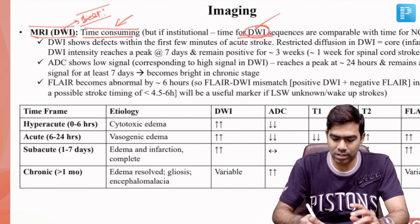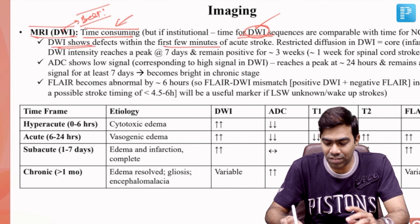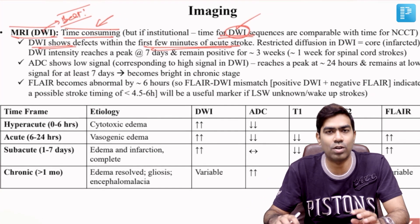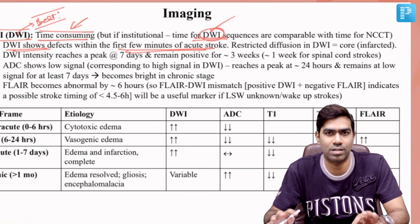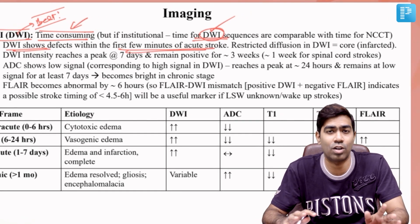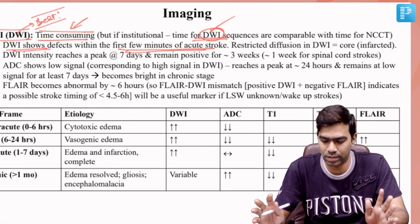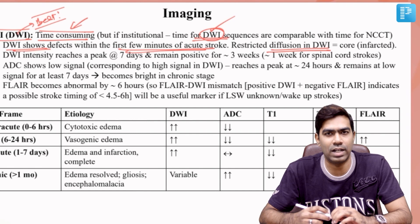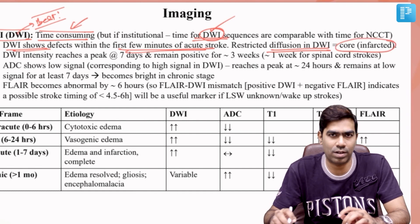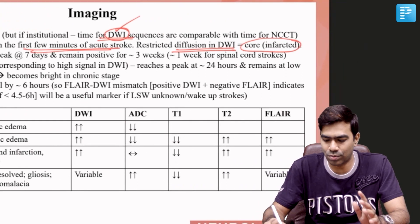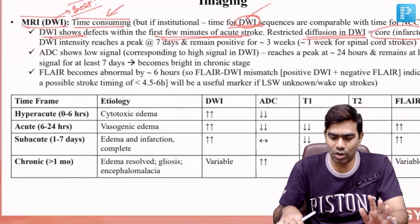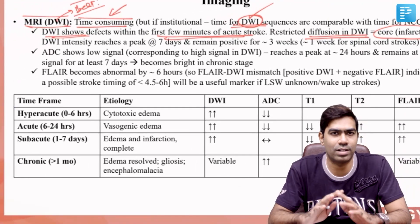Diffusion-weighted imaging will show a defect within the first few minutes of acute stroke. You'll see diffusion restriction, and areas of diffusion restriction appear visibly bright — even a non-radiologist can easily identify this. A restricted diffusion in DWI indicates a core infarct, which means dead tissue, even though this is highly questionable according to the latest studies.